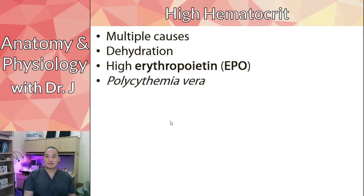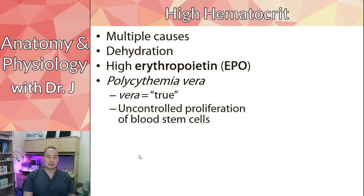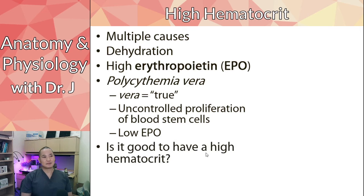There's also a condition called polycythemia vera - 'vera' from the Latin for truth. What happens is that blood stem cells produce too many red blood cells, but with low EPO. This differs from blood doping: the kidneys sense no hypoxia and adequate oxygen, so they don't produce EPO, but the proliferation of blood stem cells causes the excess red blood cells anyway.